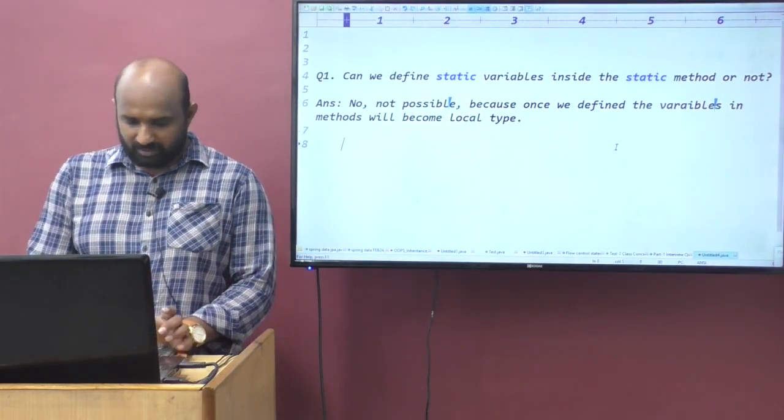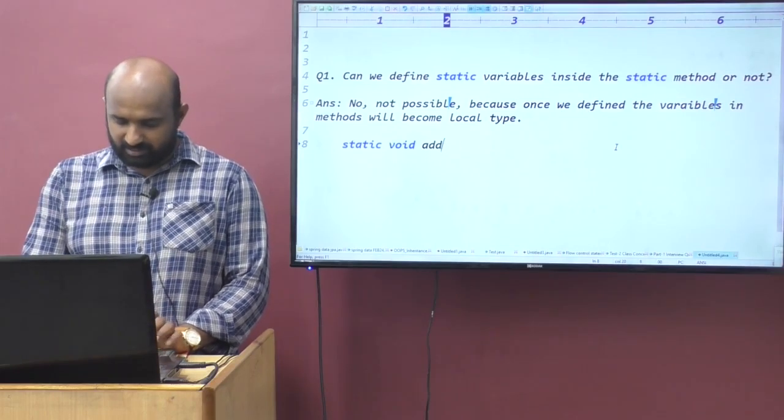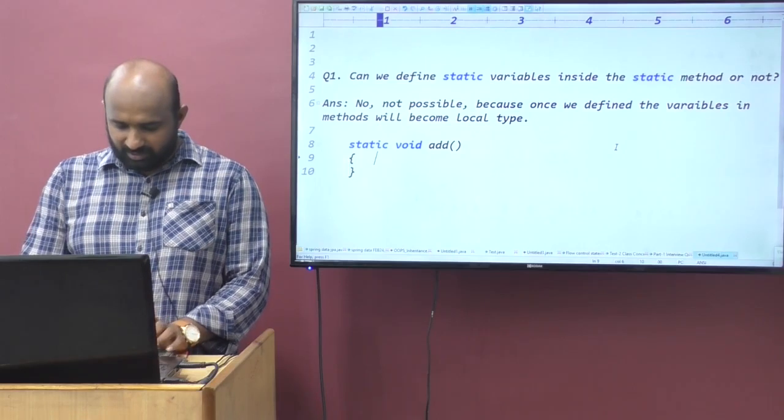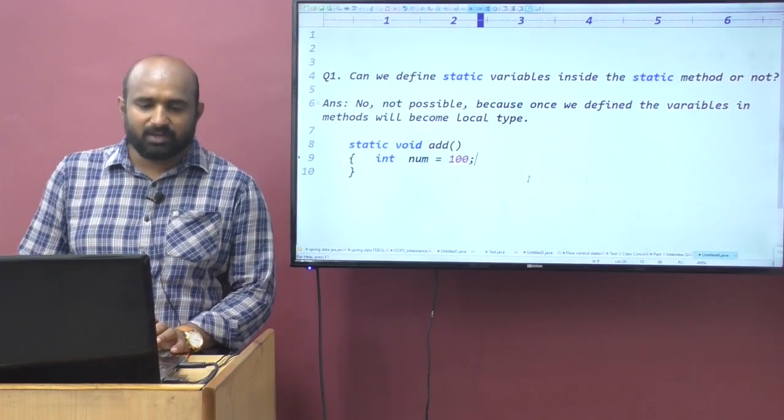For example, I have a static method, static void, something like add method. Inside the static method, if I define the variable int num equal to 100, this is by default a local variable.